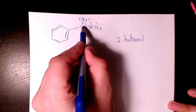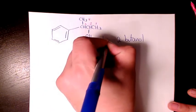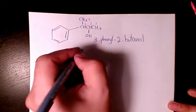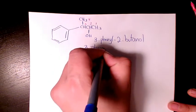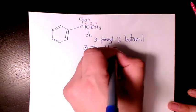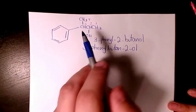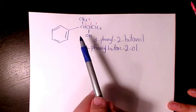And here we have 3-phenyl. Three phenyl two butanol, or we can say 3-phenyl butan-2-ol. So that's the name of this organic compound and what kind of alcohol we have.